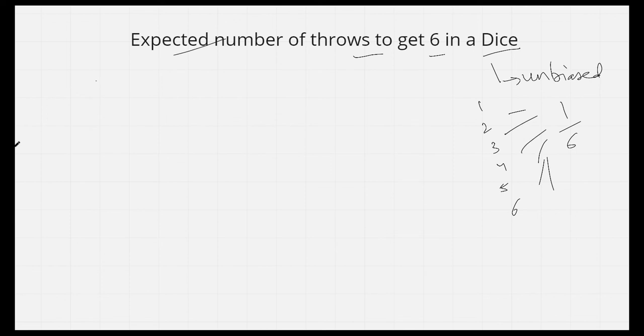Now let's say the expected number of throws, which is our answer, is T. So what is T? Let's throw the dice once. If we get 6, then it's in 1 turn. What is the probability of that? 1 by 6.